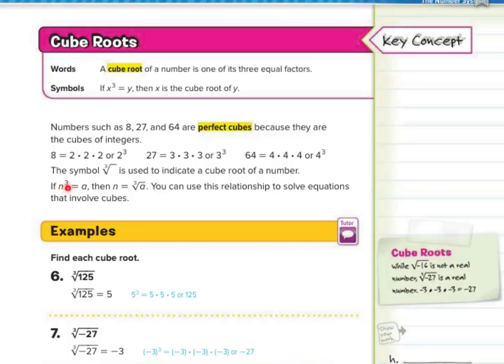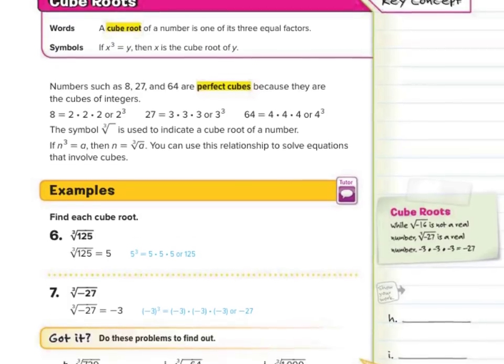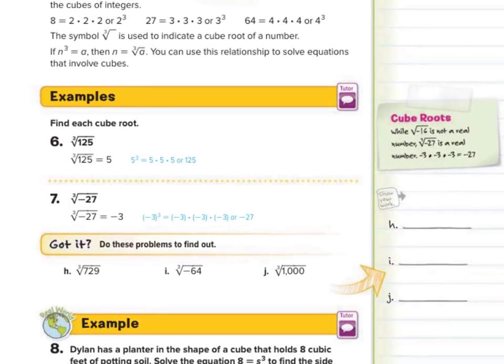You can use this relationship to solve equations involving cubes. In our guided examples, find the cube root of 125. Ask yourself: what times what times what is 125? A lot of this might be trial and error. If you did 4 times 4 times 4, that was 64 — too small. If you do 5 times 5 times 5, that's 125. So the cube root of 125 is 5.